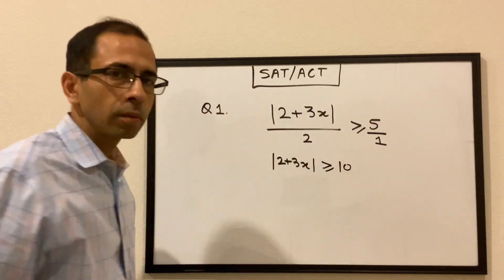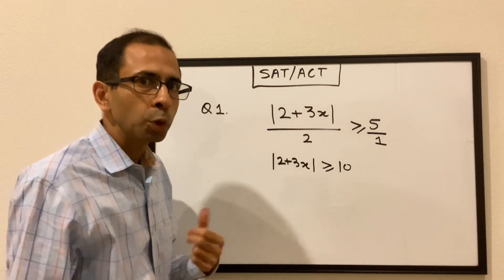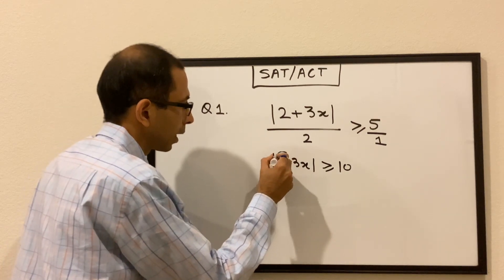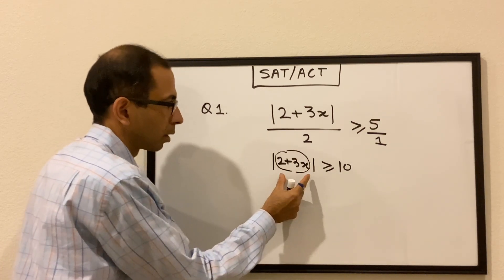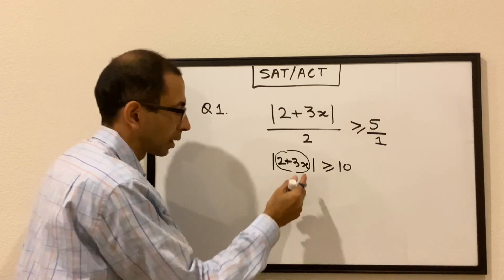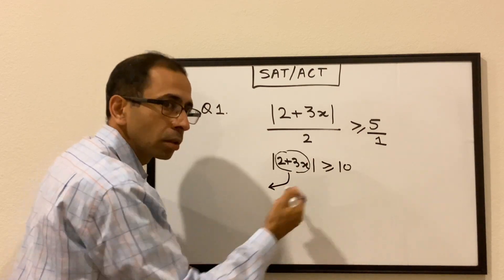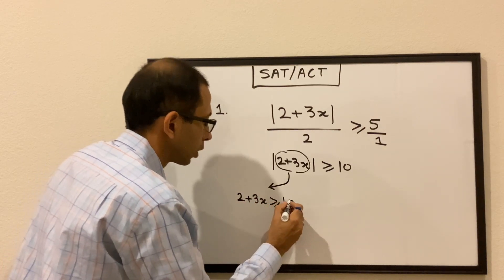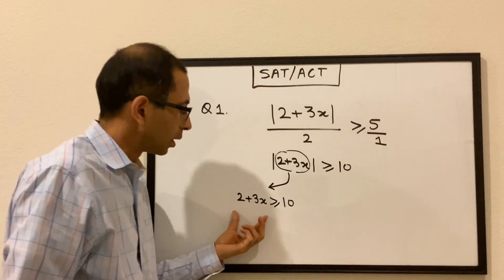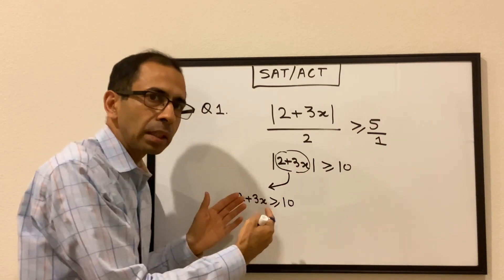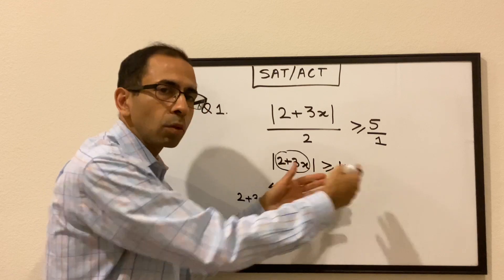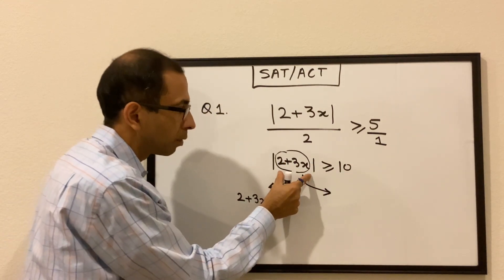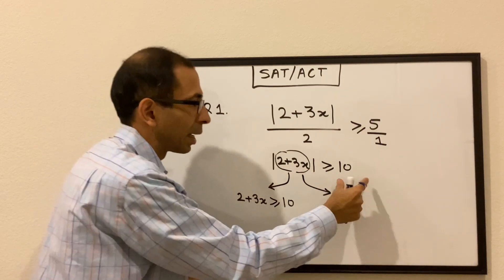5 times 2 is 10. Now, as we discussed earlier, there are two scenarios. One scenario is that the entity inside the absolute value — 2 plus 3x — can be greater than or equal to 10. Because if this entity is greater than or equal to 10, the absolute value of that entity would also be greater than or equal to 10.